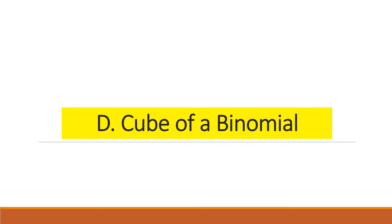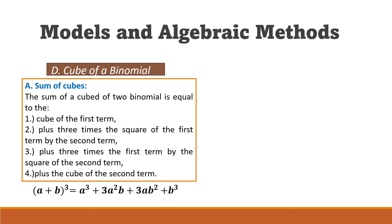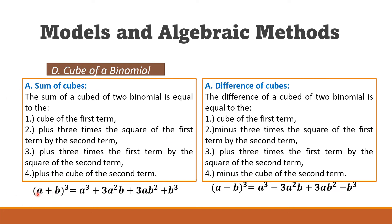We move on to the last one: the cube of a binomial. If we have (a + b)³, we use a specific model. The same applies for the difference of cubes. If it is addition, all terms are positive. If we are getting the difference of cubes, the signs of the second and last terms are negative.